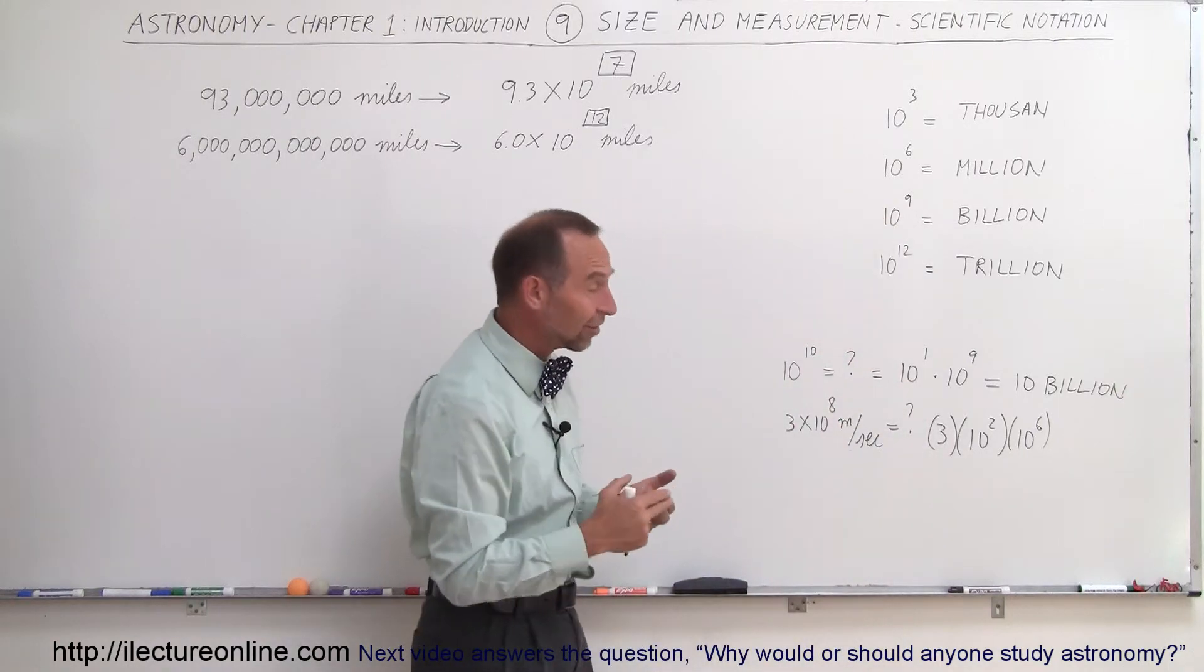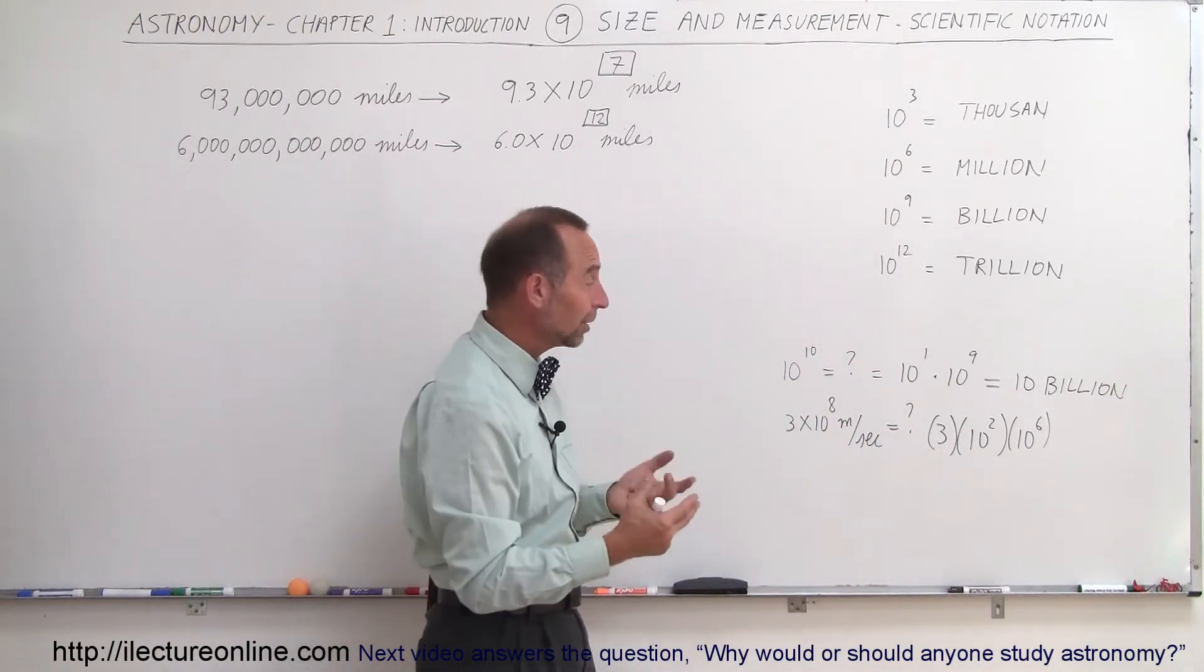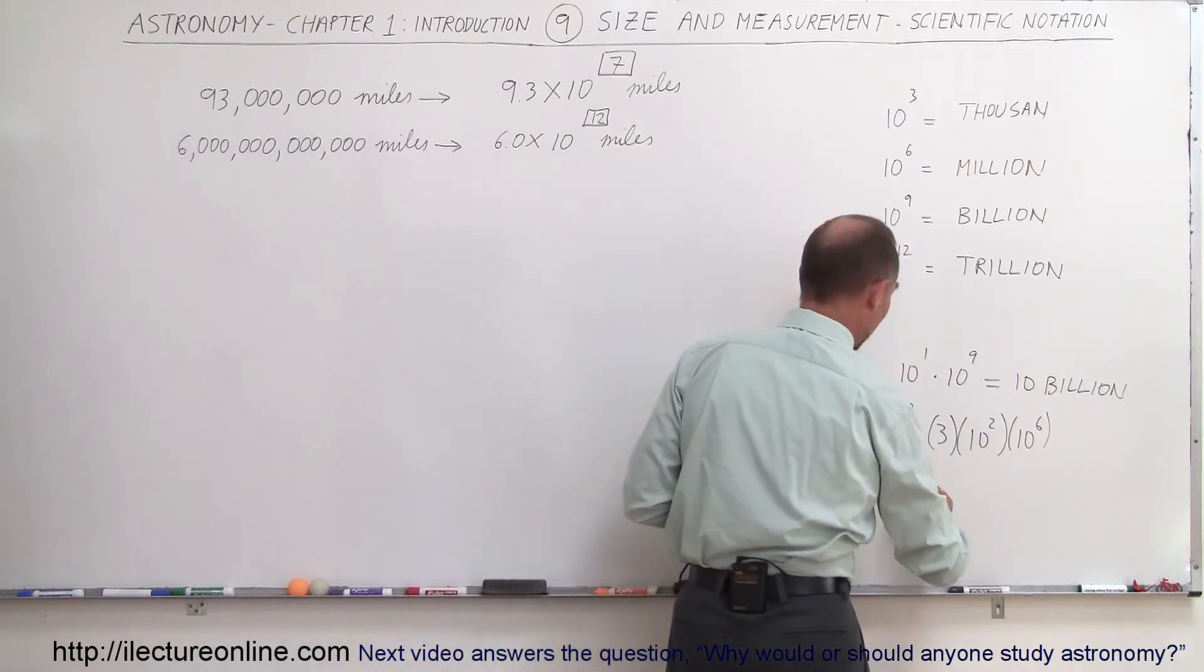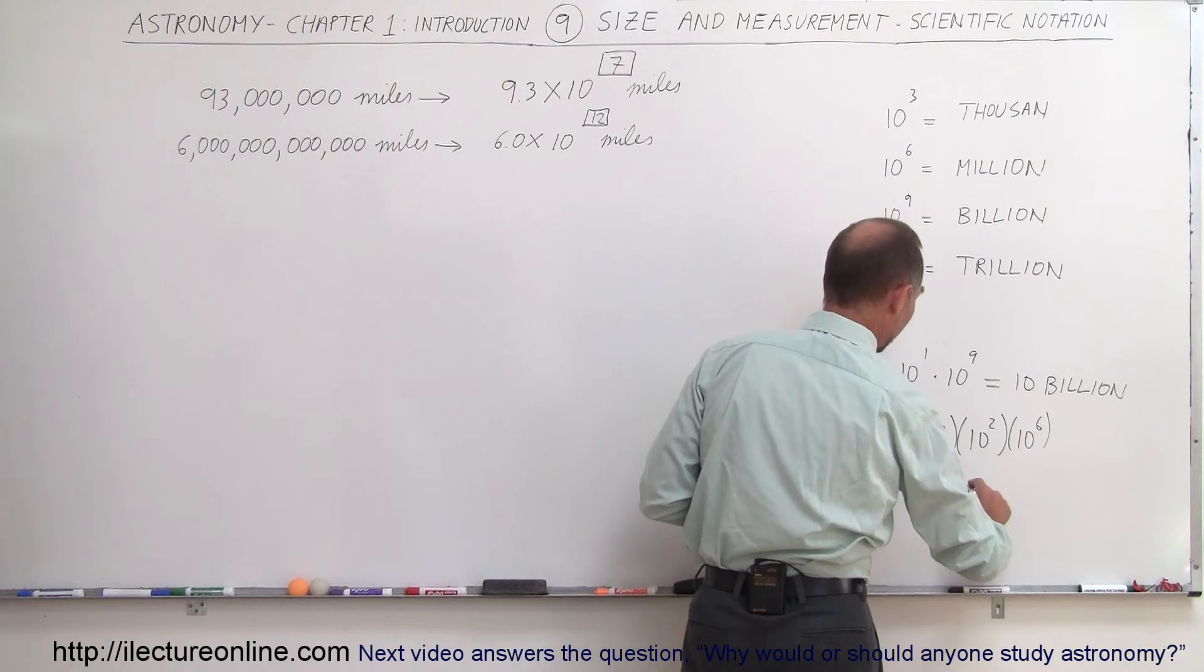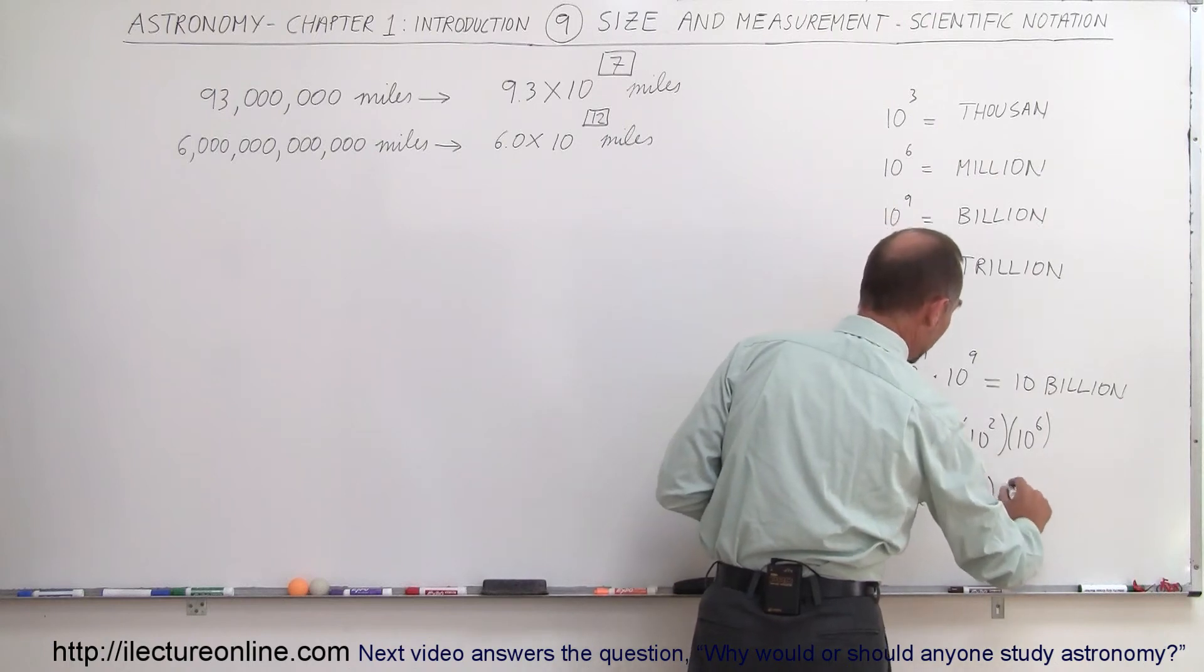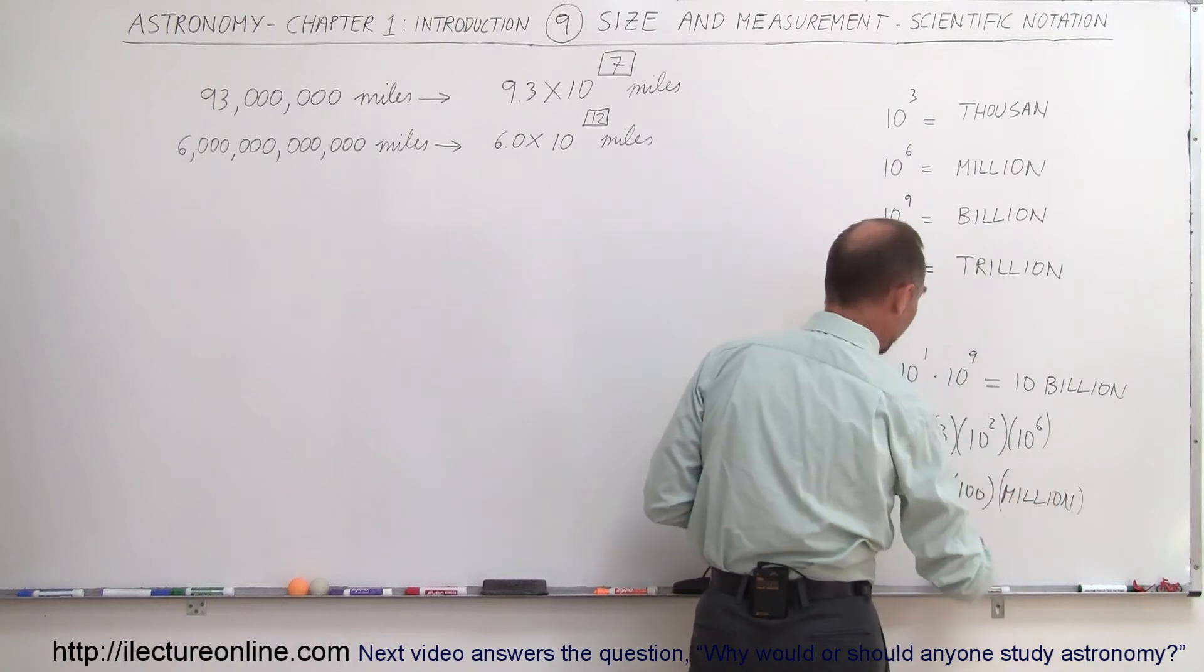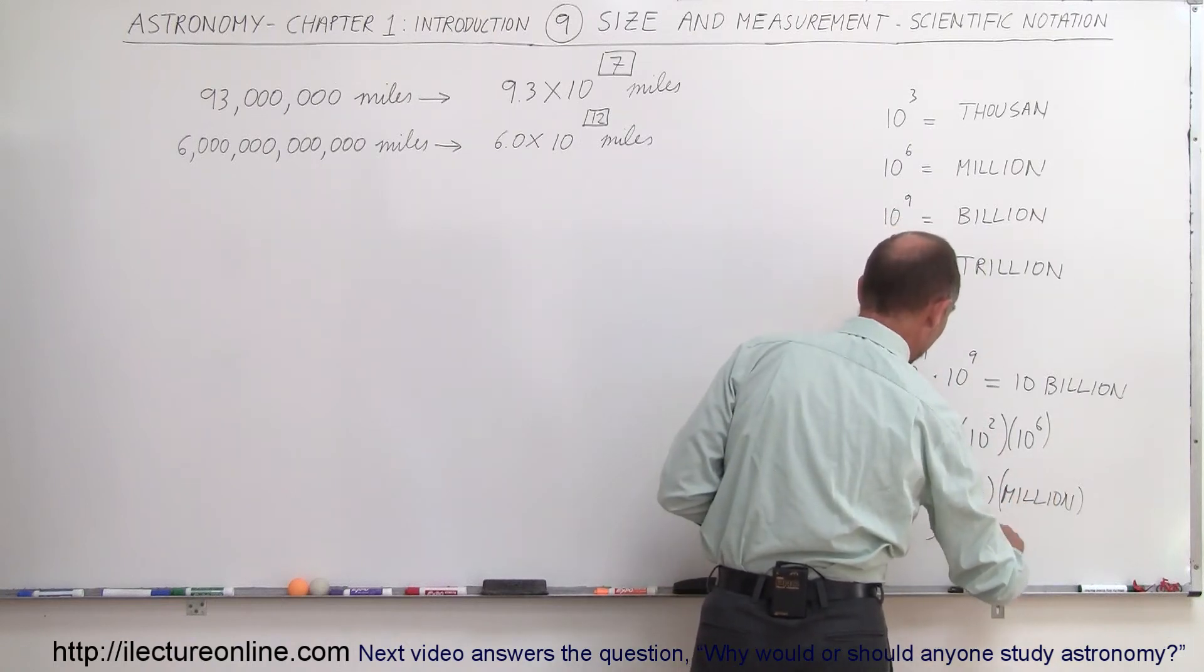And then you can think of 10 to the 6th. Oh, I know what that is. That is equal to millions. And 10 to the 2nd, that's 10 times 10, which is 100. So this is basically 3 times 100 times a million. And of course, 3 times 100 is 300. So that's 300 million.